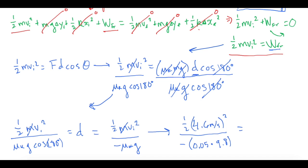That gives us −21.59 meters. The negative sign is because Δx = x_final − x_initial is technically negative, but the magnitude is what we want. So the puck slides approximately 21.59 meters, or about 22 meters, before coming to rest.